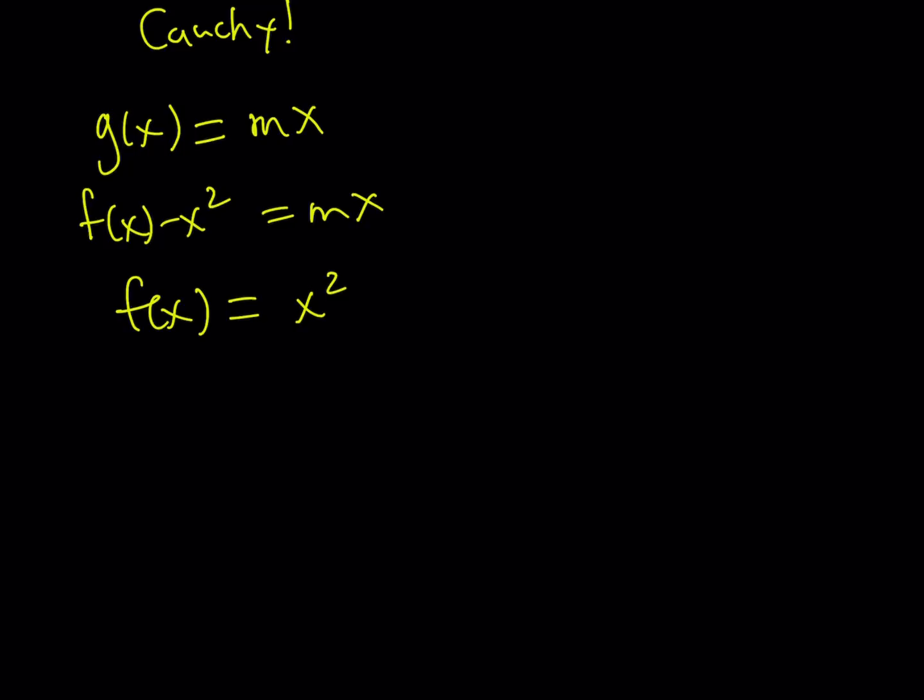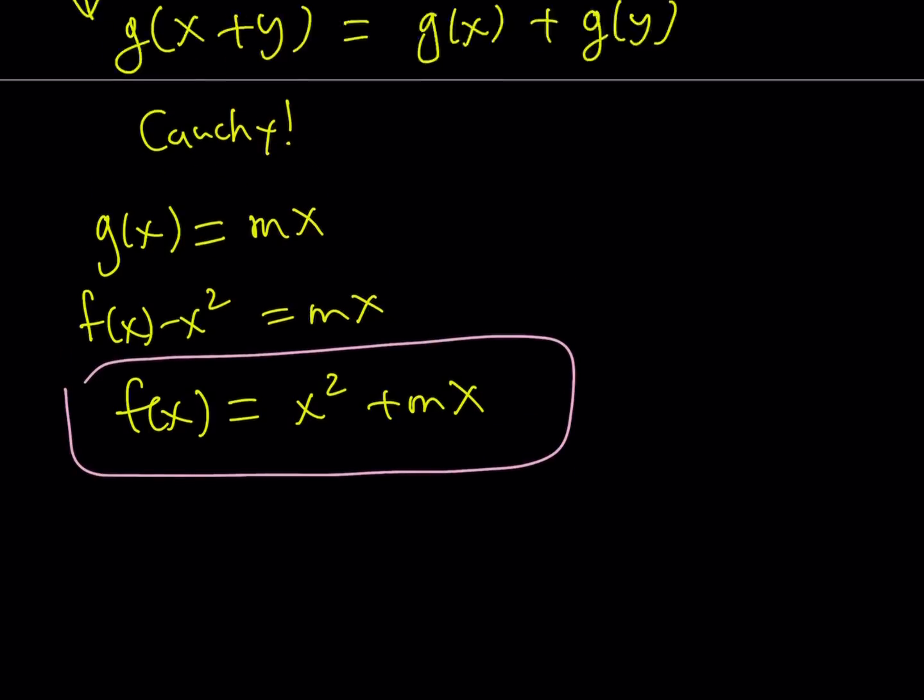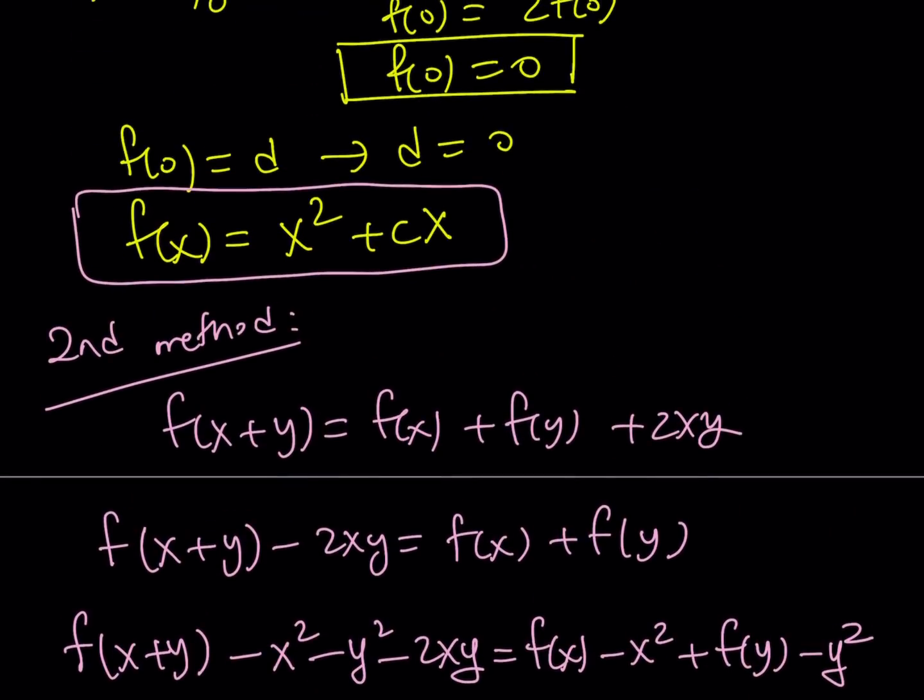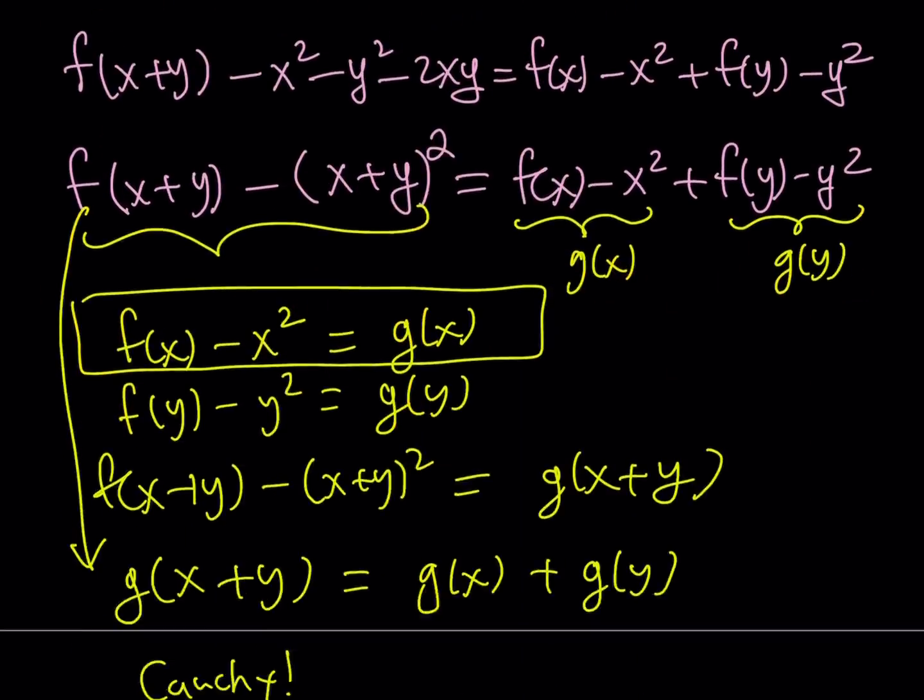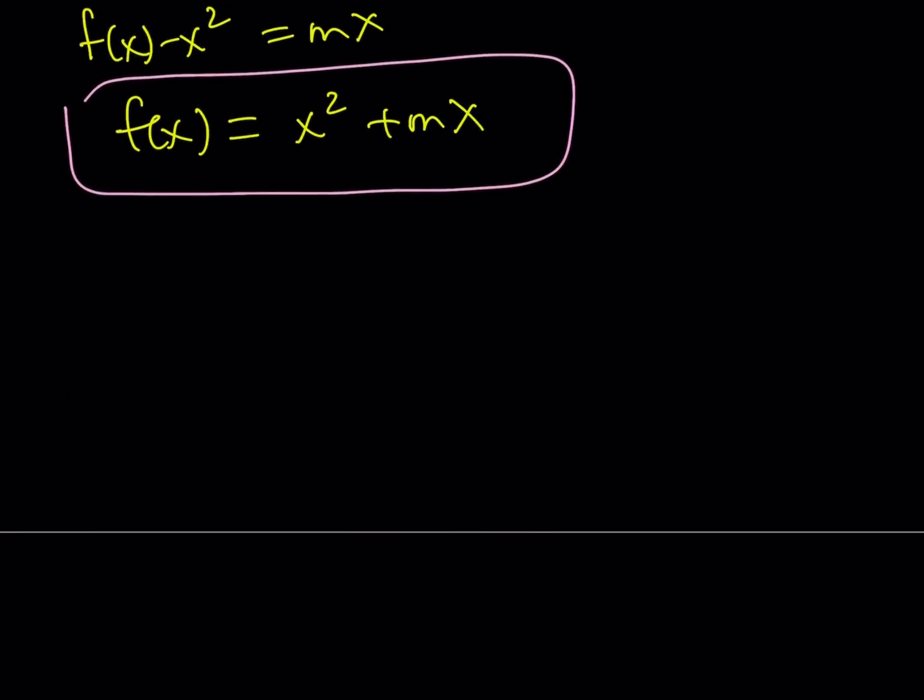And does this look like the first solution? Let's go ahead and check it out. f(x). In the first solution, we found x² + cx. c is a constant. m is a constant. So, they're good. And this brings us to the end of this video.